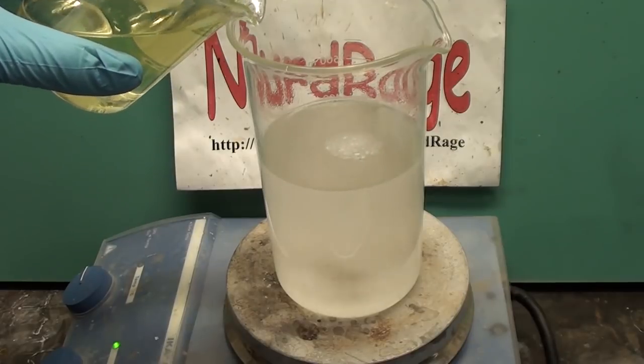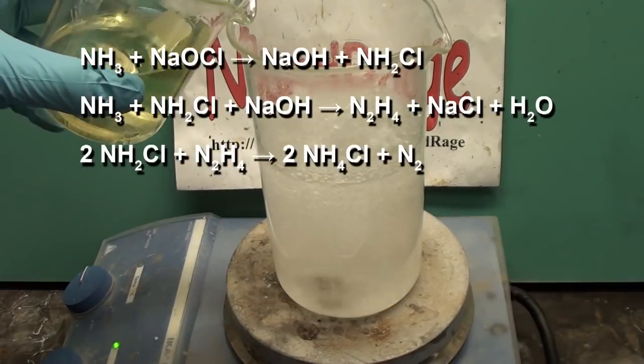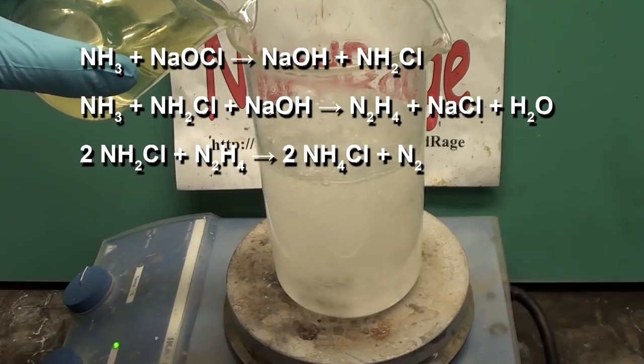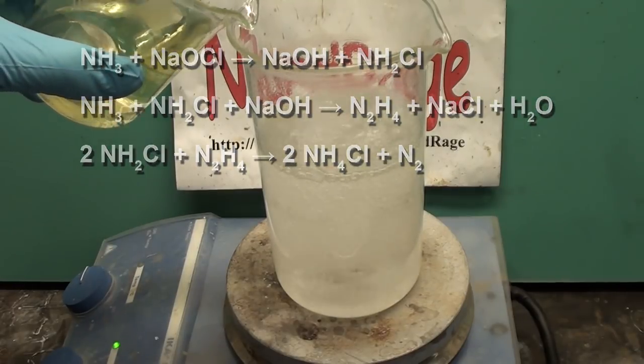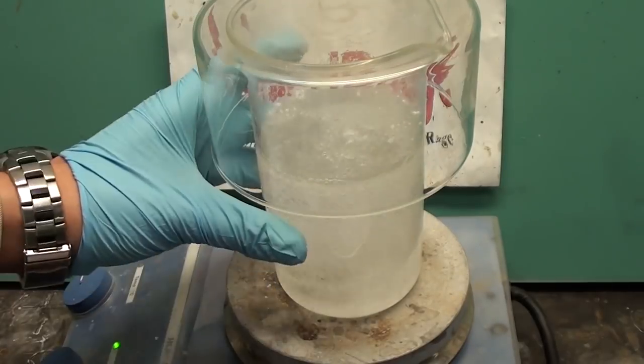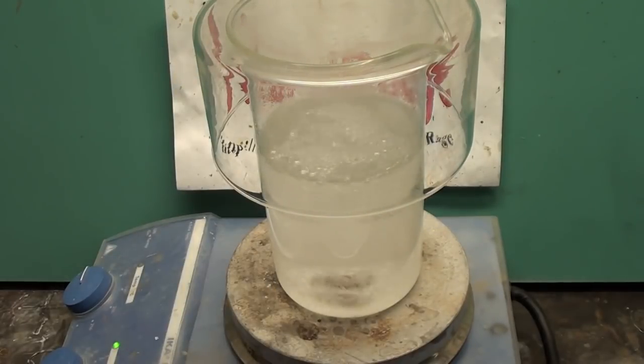Add the bleach slowly as it's going to produce a lot of gases, mostly nitrogen and ammonia and some traces of chloramine and hydrazine, so this must be performed in a fume hood or outside. Occasionally cover it and let it react, and then add bleach again when it stops bubbling.